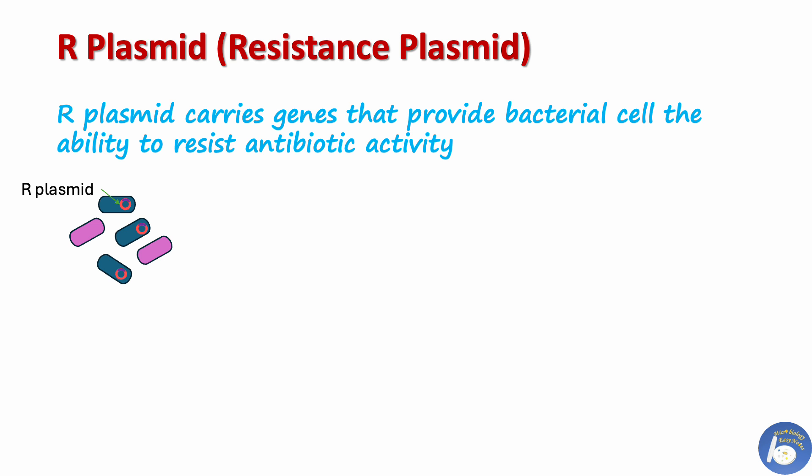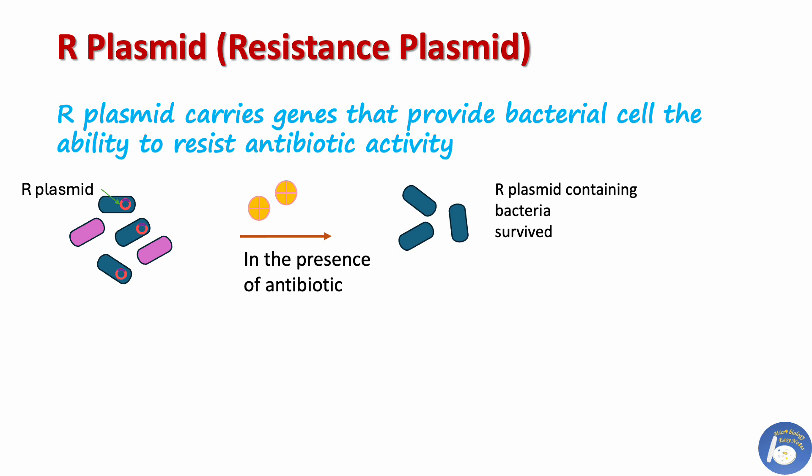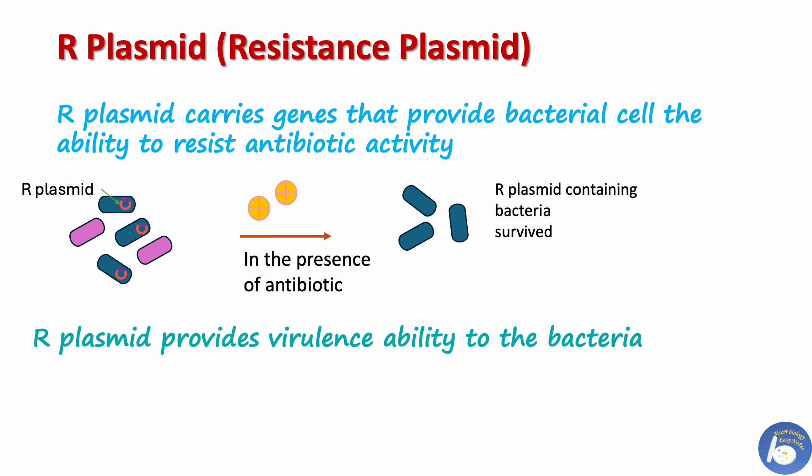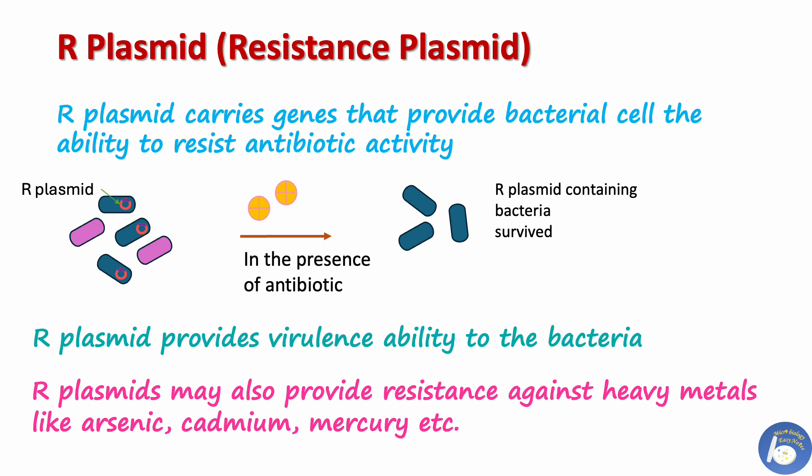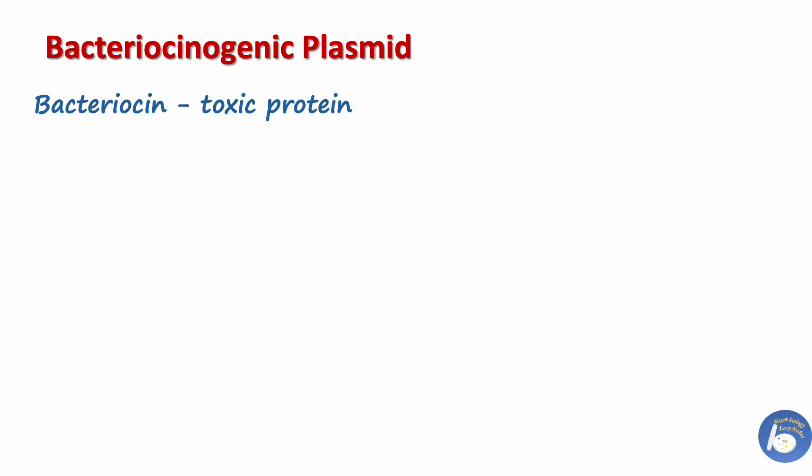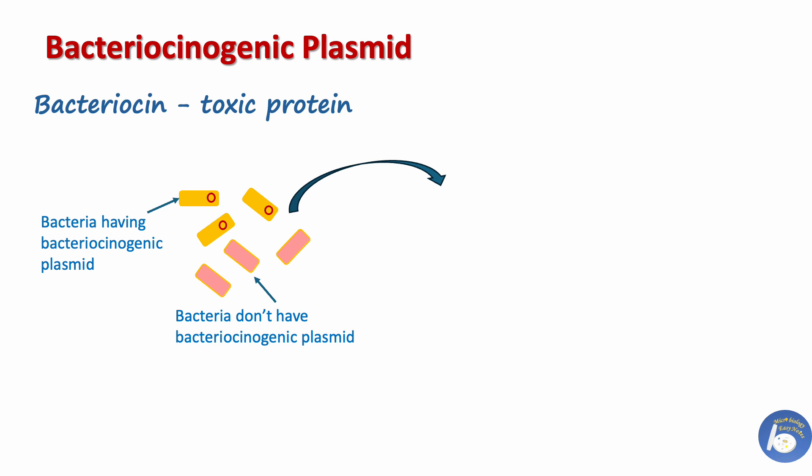Resistance plasmid: when a plasmid carries genes that provide the bacterial cell the ability to resist antibiotic activity, it is called a resistance plasmid. The plasmid may carry one or more genes to resist different antibiotics. As the R plasmid counterattacks antibiotic action, this property also makes bacteria virulent, because in such cases antibiotics cannot kill the bacteria. Resistance plasmid may also provide resistance against heavy metals like arsenic, cadmium, and mercury.